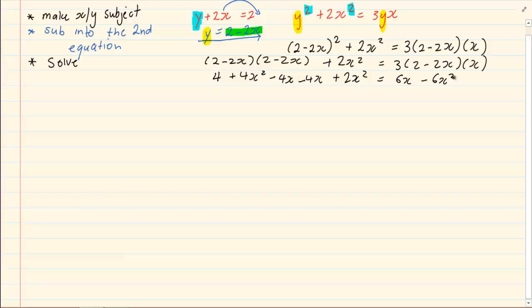Now, we make the equation equal to 0. 6x squared plus 6x squared minus 8x minus 6x plus 4 is equal to 0. We have 12x squared, 12x squared minus 14x plus 4.